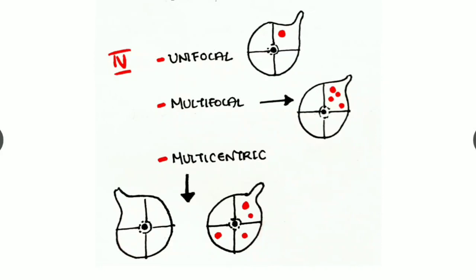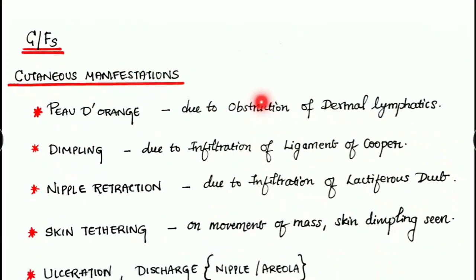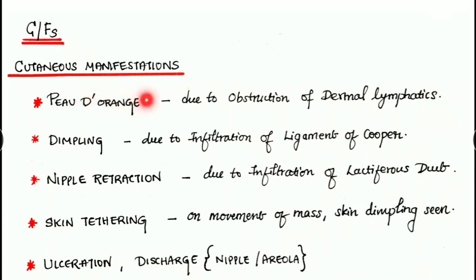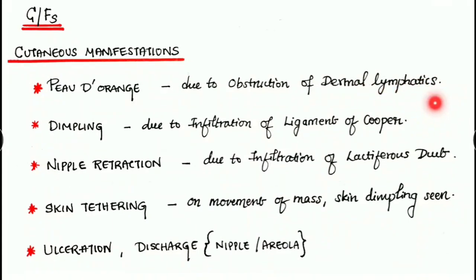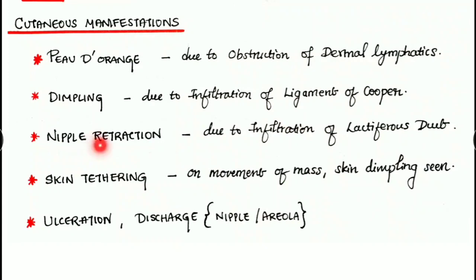Next we have to look at the clinical features. Let's see the cutaneous manifestations of breast carcinoma. First of all, peau d'orange appearance - it is due to obstruction of the dermal lymphatics where the hair follicles get sunken. Secondly, there is dimpling due to infiltration of Cooper's ligament.